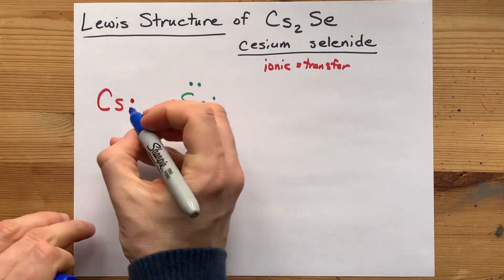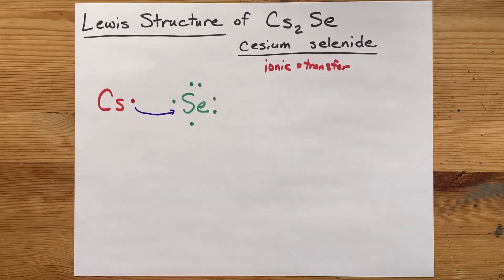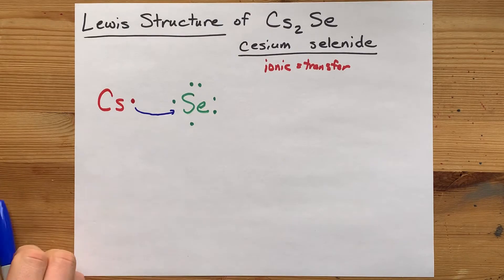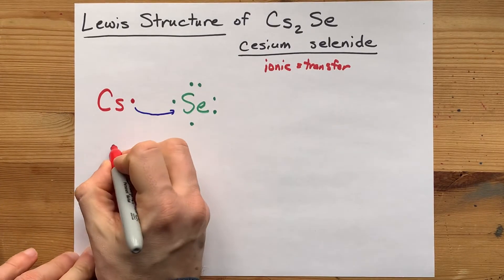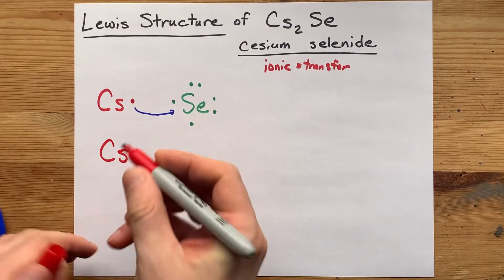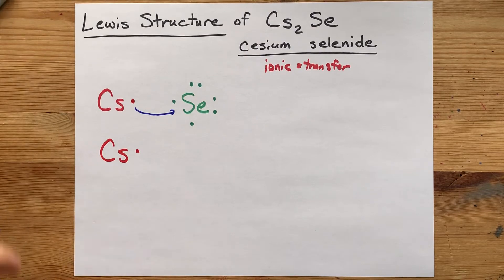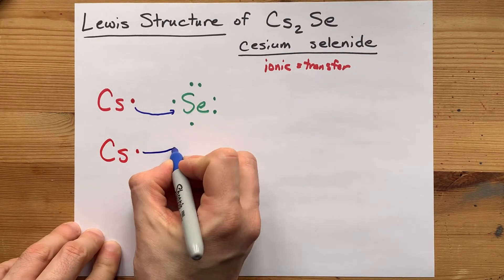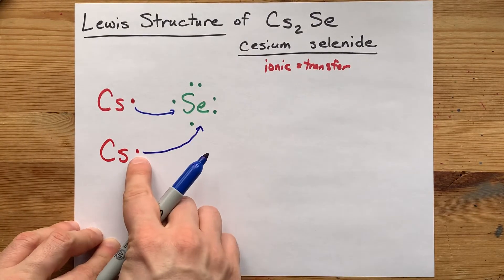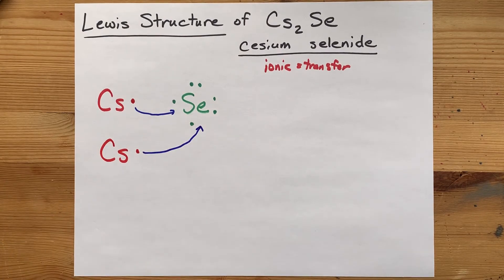Selenium brought six, and so it needs two more to have that full octet. Now, it can get one from this cesium atom, but where is it going to get another one? You're going to need to bring in a second cesium atom with its one valence electron and draw an arrow from it to the selenium because it's going to give away its electron as well.